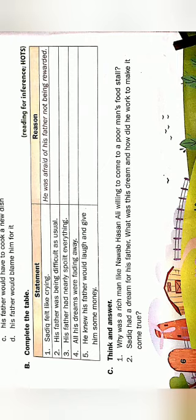Come on the section C, think and answer. Why was a rich man like Nawab Hassan Ali willing to come to a poor man's food stall? So basically this question is puchha gaya ki jo Nawab Hassan Ali thay, unki ki kyun ichha thi us poor man ki food stall par jane ki, yani ki kyun jana chahate thay?